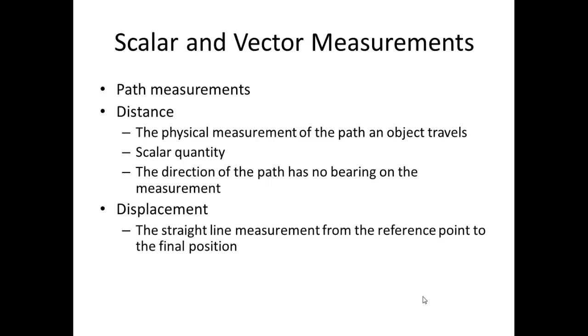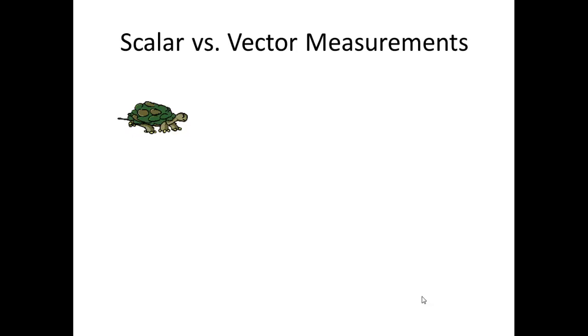The second is displacement, and that's the straight line measurements between the reference point and the final position. It's a vector quantity, and that means direction has meaning and is required.